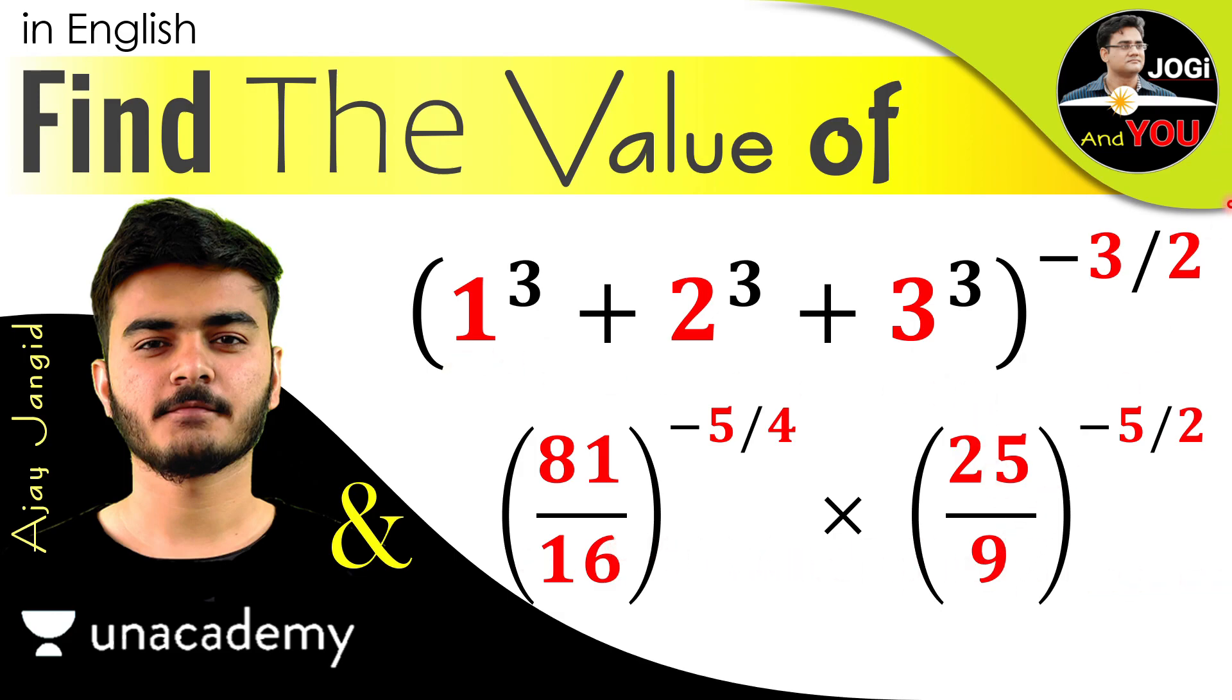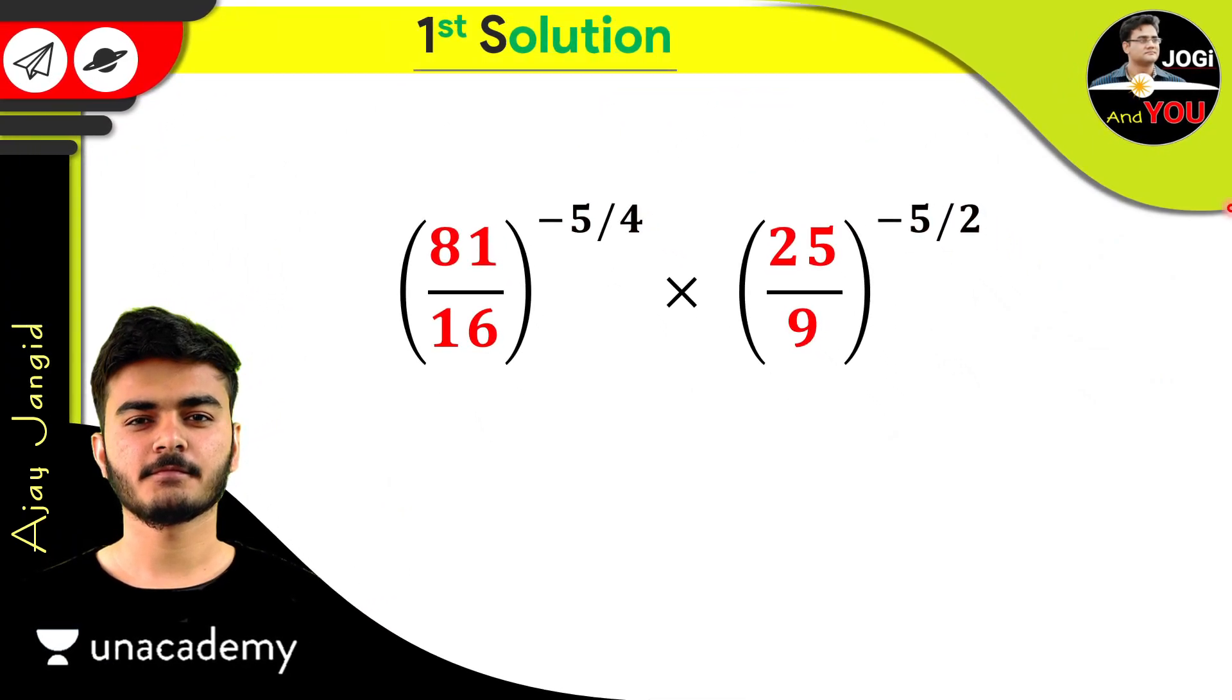So we have two expressions here and you have to find the value of there. For solving this type of questions, let's make some blank space here and took a question here, which is 81 upon 16 to the whole power of minus 5 upon 4, multiply by 25 upon 9 to the whole power of minus 5 upon 2.